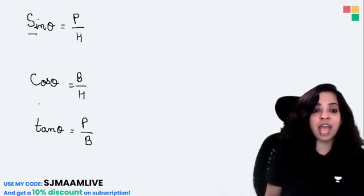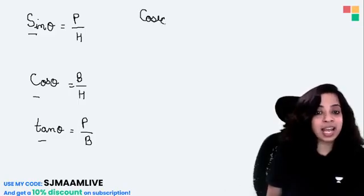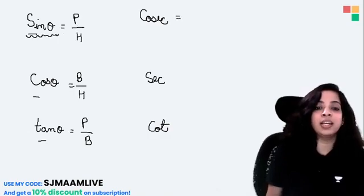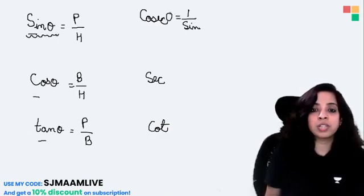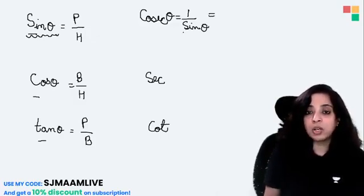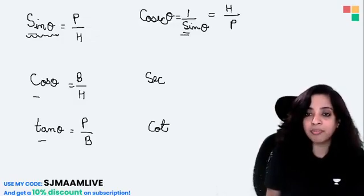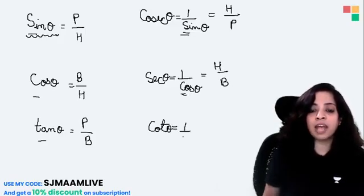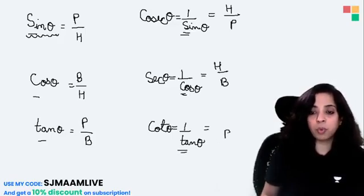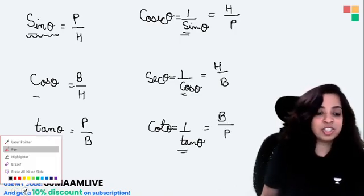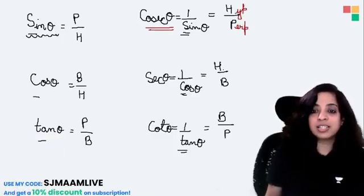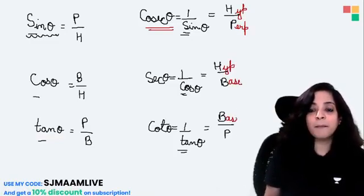The remaining three ratios — cosec, sec, and cot — are also easy to remember because they are reciprocals. Cosec is the reciprocal of sine, so cosec theta equals hypotenuse by perpendicular. Sec is the reciprocal of cos, so sec theta equals hypotenuse by base. Cot is the reciprocal of tan, so cot theta equals base by perpendicular.